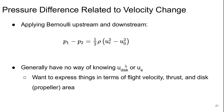We generally have no way of knowing either u_e or u_disk. So we want to express these things in terms of the stuff we do know: the flight velocity, probably the thrust, and we typically would expect to know the disk area, which corresponds to the cross-sectional area of the propeller.